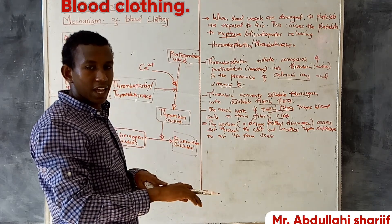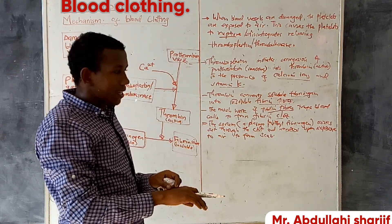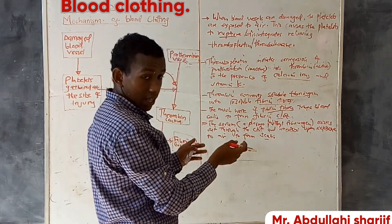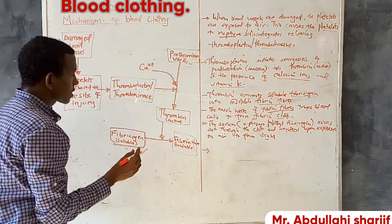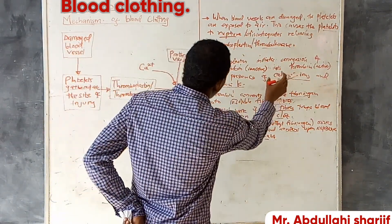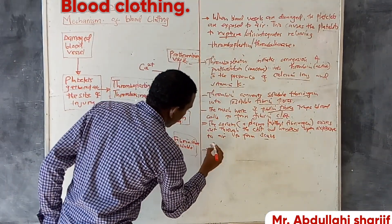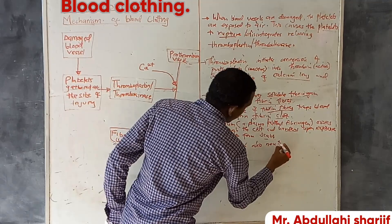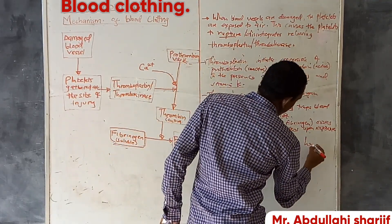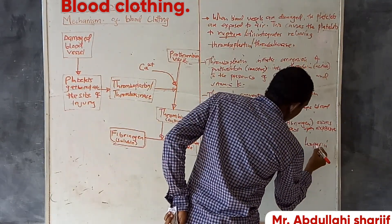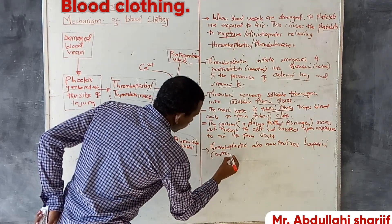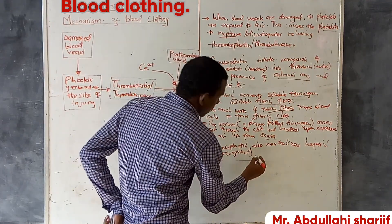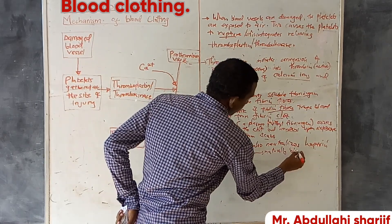When you have a wound, sometimes a hard cover forms — that is the scar. This scar prevents the entry of pathogens. Apart from the conversion of prothrombin into thrombin, thromboplastin also neutralizes heparin, which is an anticoagulant that occurs naturally in the blood.